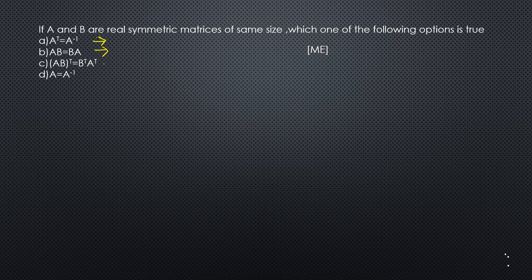Option 3: (AB) transpose equals B transpose times A transpose — this is the correct option, known as the reversal law of transposes. Option 4: A times A equals A inverse — this is true only for involutory matrices. So the correct answer is option C.